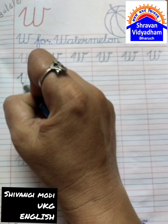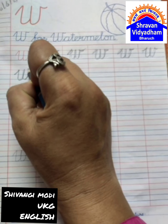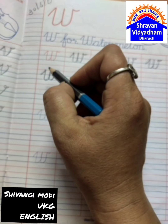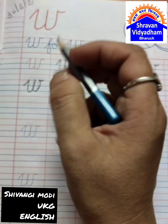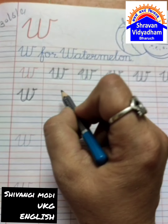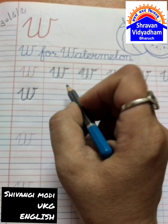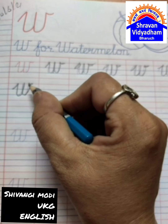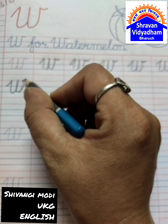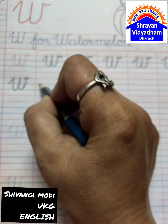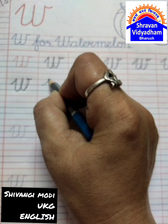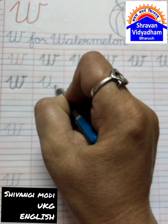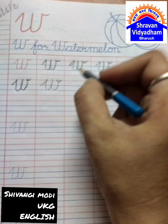W is the same as cursive writing. The difference is capital W is always written in three lines. Slanting line, turn, turn, again turn.